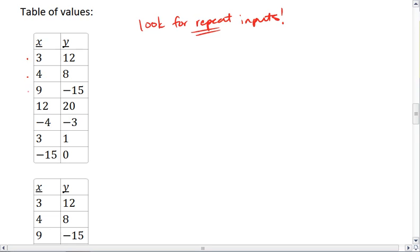So we look, we have 3, 4, 9, 12, negative 4, 3. And these 3's correspond to different outputs. So if we were to plug 3 into our black box function, we get 2 different outputs, meaning this is not a function.